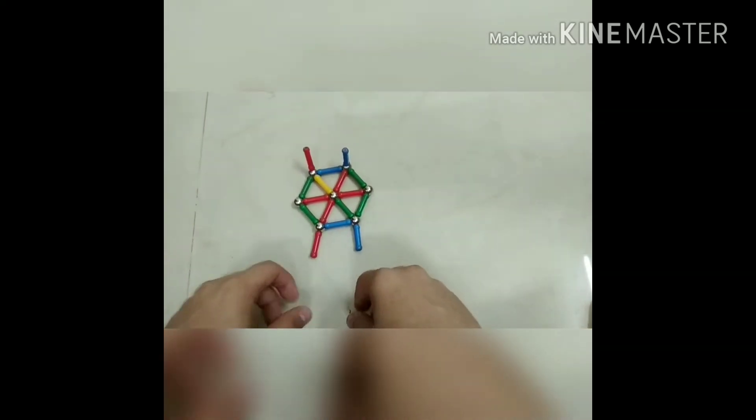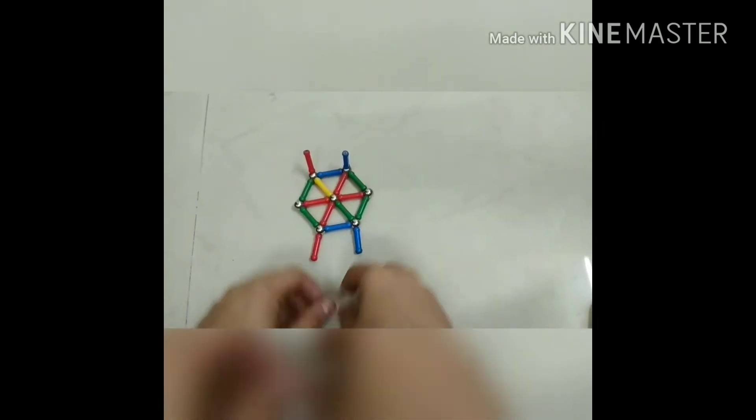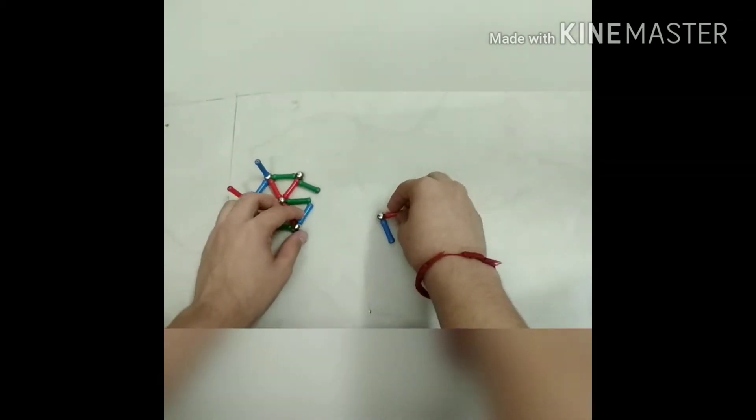Now we will be using 16 magnetic sticks and 7 magnetic balls. First of all we will be taking 1 magnetic ball and connecting it with 6 magnetic sticks.